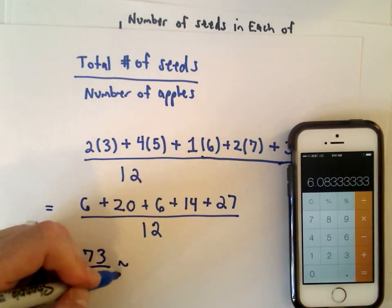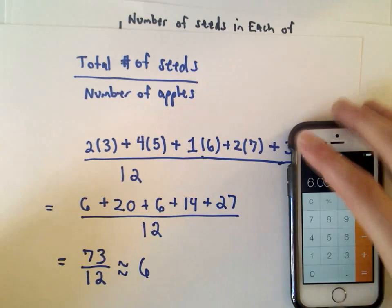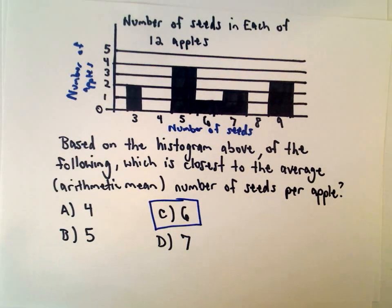So that's roughly equal to, it's a little bit bigger than six, roughly equal to six. So the average number of seeds per apple will be answer choice C. Six seeds per apple is going to be the average.